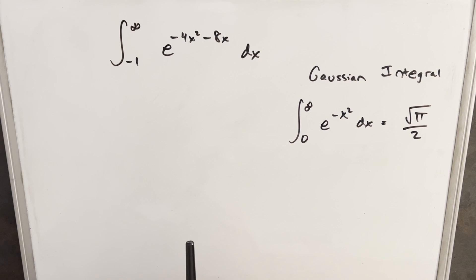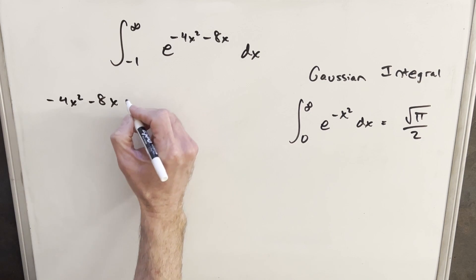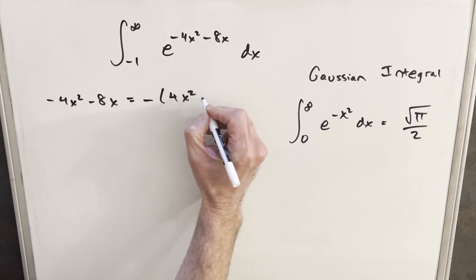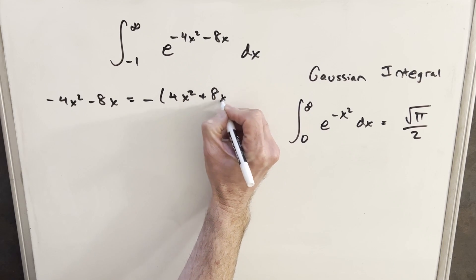So for us, the whole strategy is going to be what can we do to this exponent to get it to look like this, and then we can maybe use this formula. I'm just going to focus on this exponent right now, and I'm going to start by factoring out a minus so that we have 4x squared plus 8x.